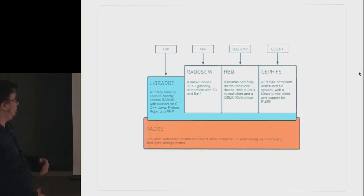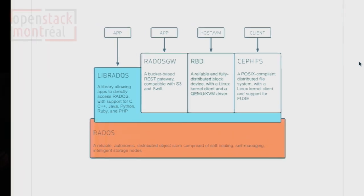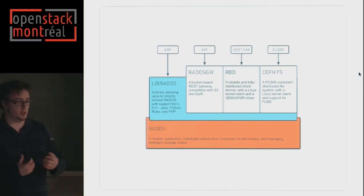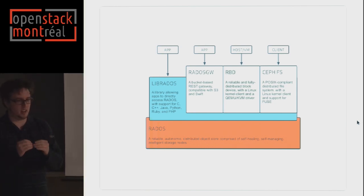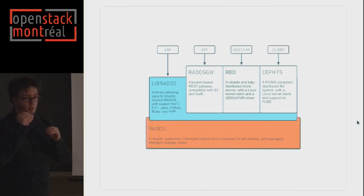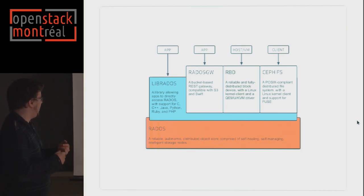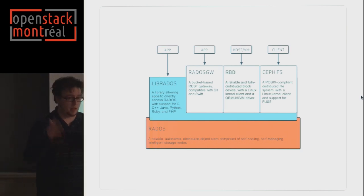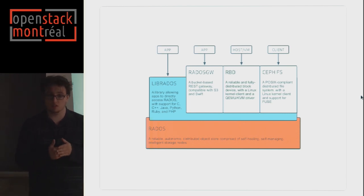The Ceph software stack. You have RADOS, which stands for Reliable Autonomic Distributed Object Store. A bit like Swift, it's an object store that takes care of replicating data so you don't lose it whenever you lose a computer or a disk. The core of Ceph is RADOS — everything is replicated in that object store. And you have librados that sits on top of RADOS, which is a set of bindings to talk to RADOS through various APIs. There are bindings for C, C++, Java, Python, Ruby, and PHP.